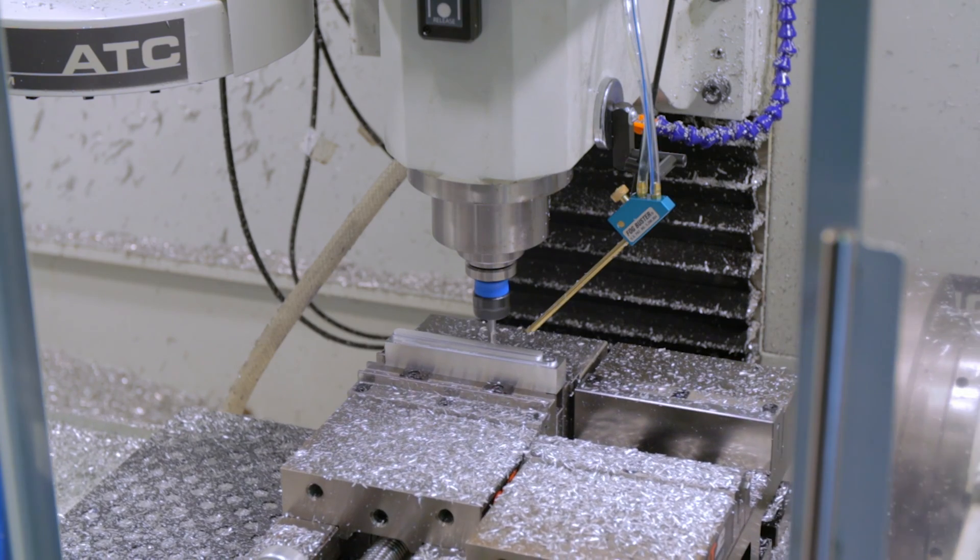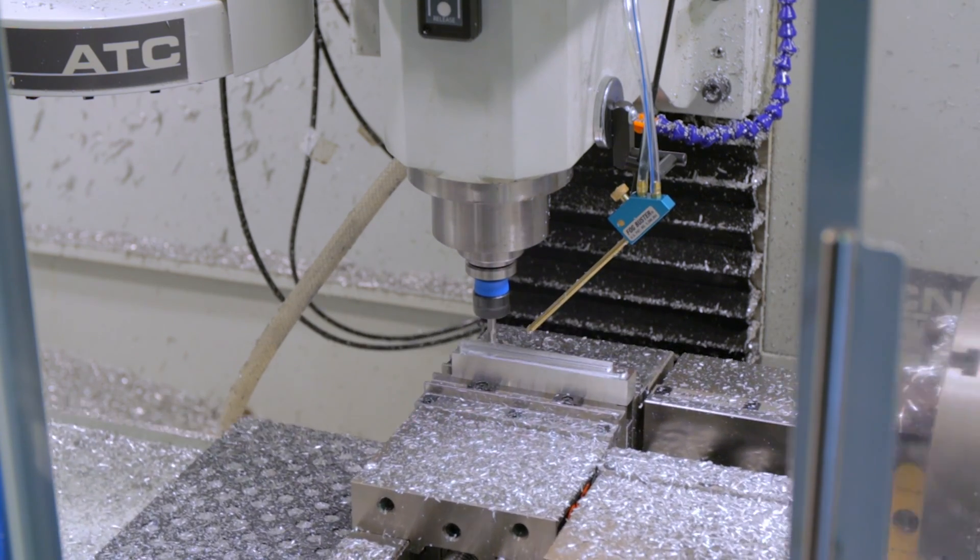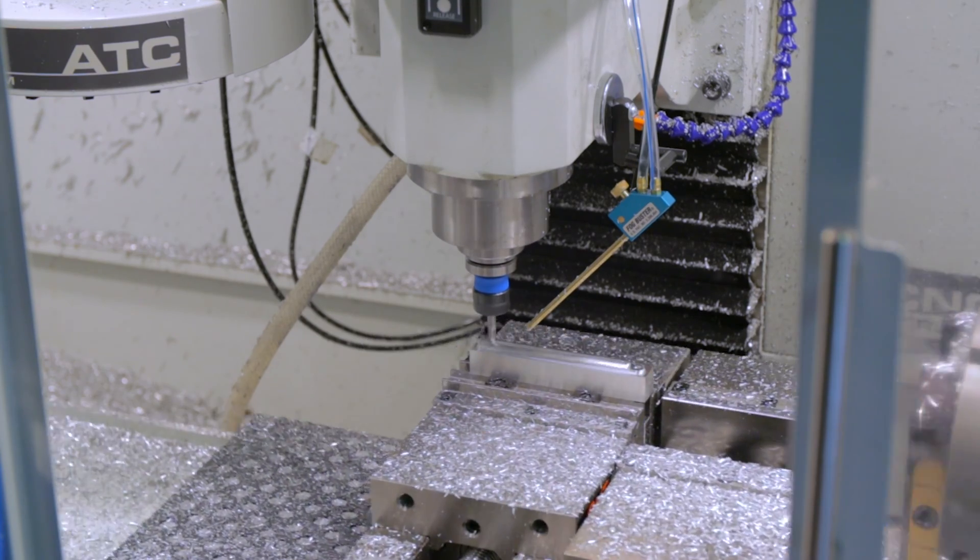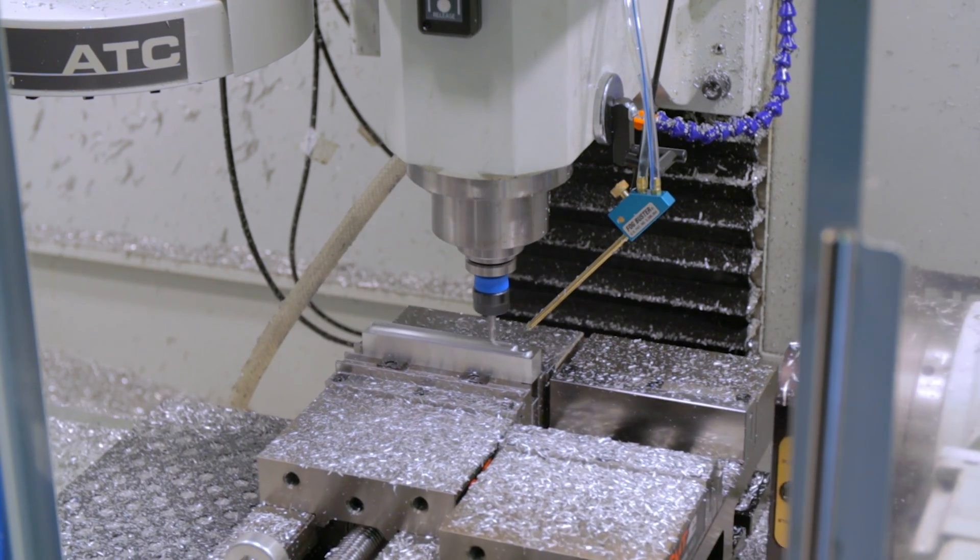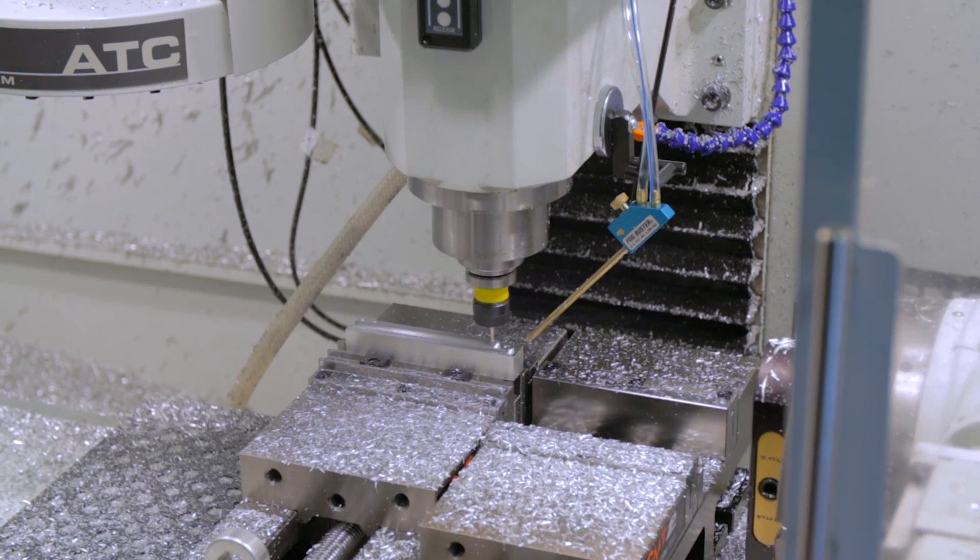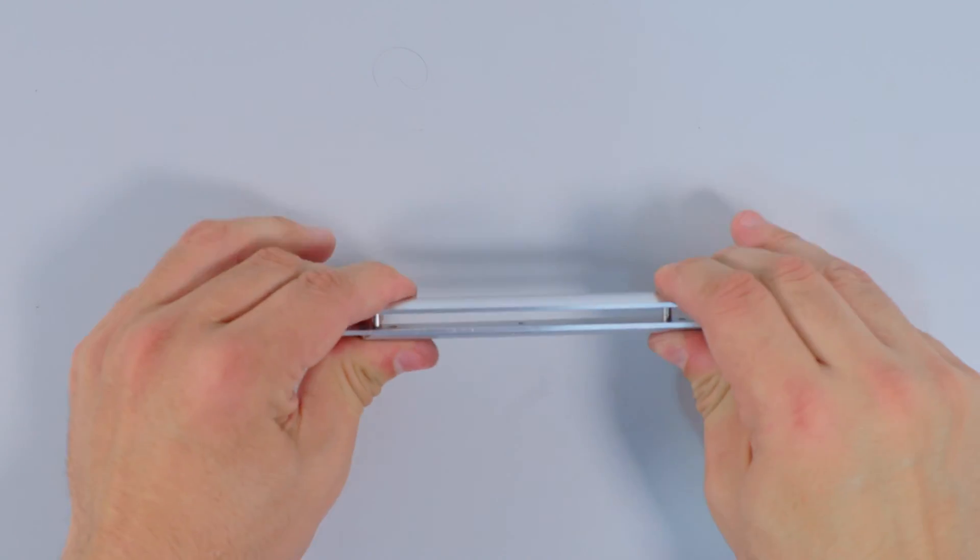I tried messing with different surfacing step overs and feeds, but I'm curious about how fast you can go. Because if it looks rough but then I tumble it or polish it or Scotch-Brite it later and it still looks good, then I don't have to go super slow and I can make parts faster.